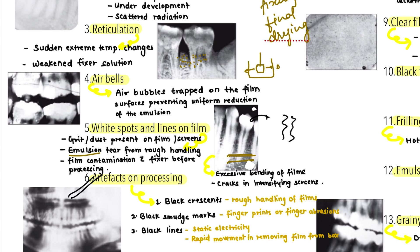The next error is artifacts seen during processing. These include crescents, smudge marks, and black lines. Crescents are caused by rough handling. Smudge marks are fingerprints on the film. Black lines are due to static electricity — from rapid movement when removing the film from the box — and are mostly seen on OPGs. Black crescents can be avoided by handling the film on the edges only.